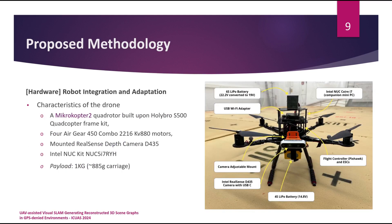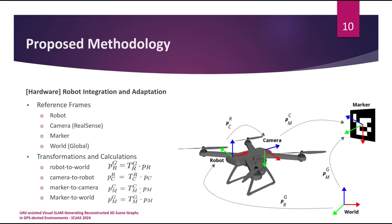On the hardware side, we focus on robot integration and adaptation to the framework. You can see the characteristics of the drone used for the experiments here. The visual SLAM framework has been implemented on the NUC companion computer mounted on the drone, and all map reconstruction tasks are performed in real-time using this companion computer. The drone is also equipped with a RealSense depth camera to provide depth information for better map reconstruction. In this slide, you can also see the reference frames considered in the work — robot, camera, marker, and world frames — and the transformations required for correct pose estimation, including robot-to-world, camera-to-robot, marker-to-camera, and marker-to-world.